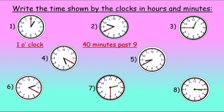When we tell the time by hours and minutes, we mention the minutes first and the hour later. The minute hand is on 9 and the hour hand is between 12 and 1, so naturally we take the number 12. So it's 45 minutes past 12.